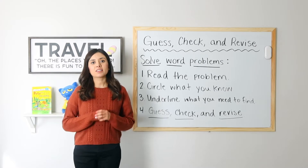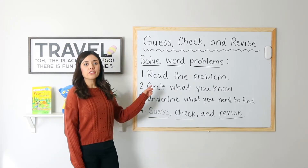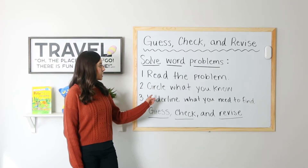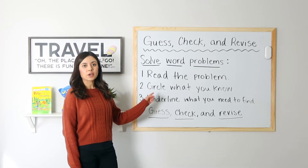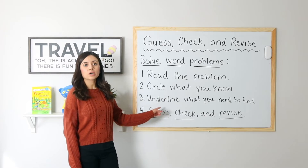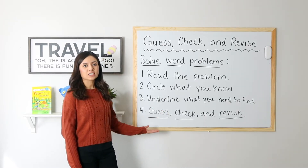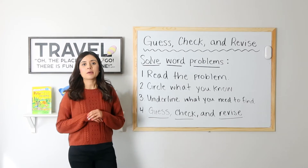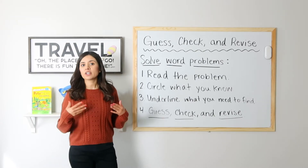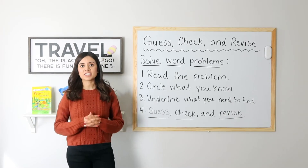Before we get into the lesson let's go ahead and review the steps that we will follow. First we will read the problem, second we will circle what we already know, third underline what we want to find out, fourth we will guess, check, and revise. That means that after we guess we will see if we were correct. If we are not correct we will go ahead and fix what needs fixing.